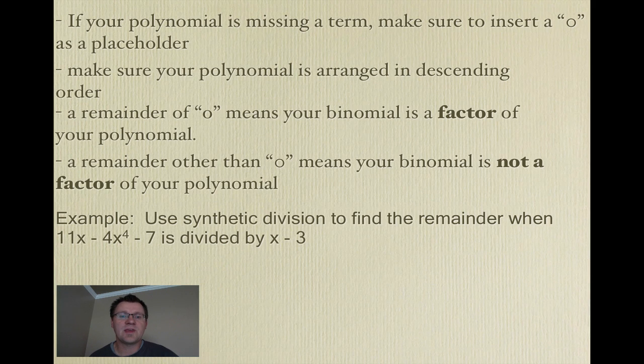Here's an example, keeping these things in mind. It says, use synthetic division to find the remainder when 11x minus 4x to the 4 minus 7 is divided by x minus 3. So, the first thing we have to take into account is that this is not in descending order. We need it to be in descending order. So, we need to have negative 4x to the 4 first, because it has the highest degree, plus 11x, and minus 7. The next thing is, we are going to use our synthetic division. So, we make our L.